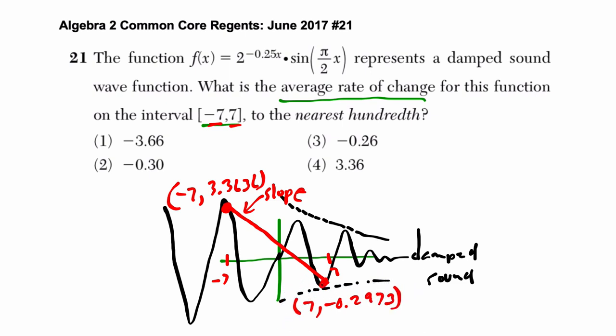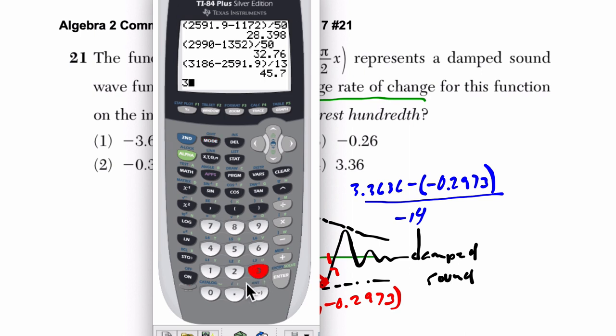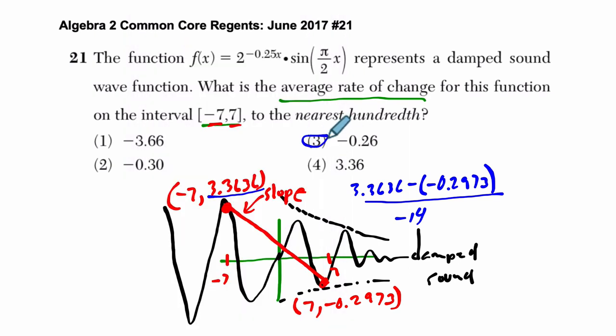So now we just find the slope between them. How do we do that? You could do 3.3636, that's our first output minus our second output. 3.3636 minus negative 0.2973 over negative 7 minus 7, which is negative 14. And if we divide these two in the calculator, let's see what we get. Now just a quick thing here. Please don't just enter 3.3636 minus negative 0.2973 and then just divide by negative 14. You've got to put this whole thing in parentheses. Otherwise, it'll throw your calculation off. So instead of entering in parentheses, I just hit enter and then I divide by negative 14. And what do I get? About negative 0.261. So that's choice three. All right. I hope that helped.